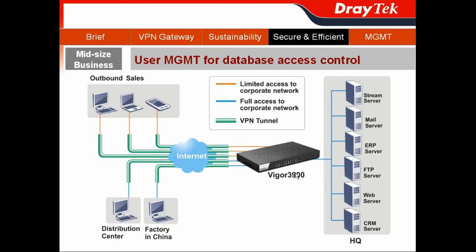When we use the ABC company's story for demo, for their remote sites like the distribution center and factory in China, they grant full access to the corporate databases. However, for the outbound sales reps, they can only access the string server, mail server, ERP server, and CRM server. In other words, those outbound sales reps cannot access the FTP server and the web server. So our configuration is to block outbound sales people from accessing the FTP server and web server by user module.